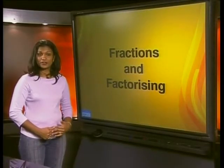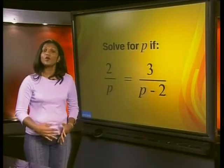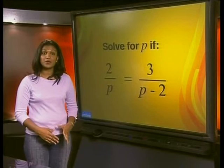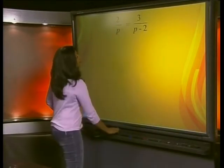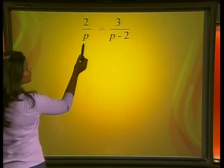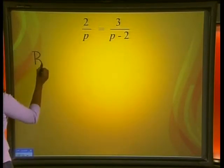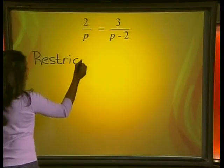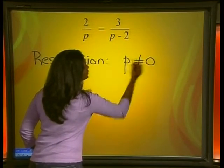Let's look at this first example. Solve for P if 2 divided by P is equal to 3 divided by P minus 2. Before we solve for P, let's use what we discussed in a previous lesson about restrictions on the denominator. On the left hand side we have 2 divided by P. We know that the value of P may not be equal to 0, so our restriction is that P is not equal to 0.